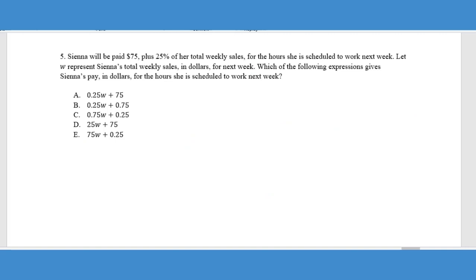All right, number five. And we can see by a quick glance at the answer choices again, we're trying to come up with an expression this time, not necessarily an equation, but again, we're trying to interpret what the word problem is trying to calculate. It says Sienna will be paid $75 plus 25% of her total weekly sales. Okay. So again, I can make a quick, at least verbal equation here. I know that I'm going to get $75 plus 25% of weekly sales.